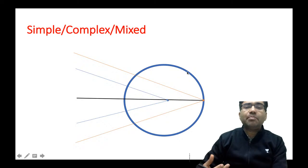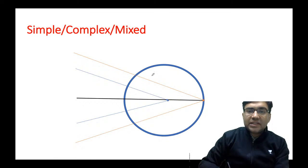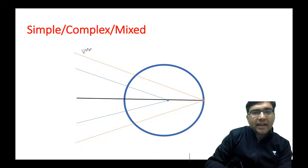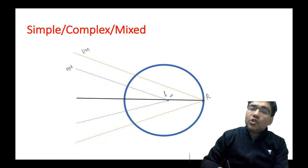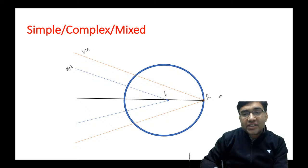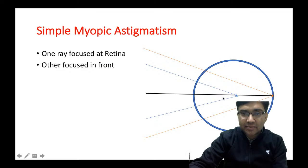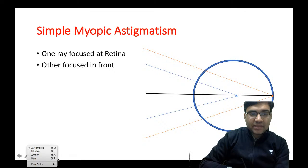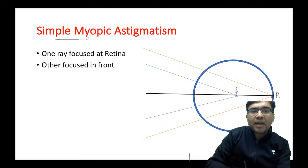Another classification is simple, compound, and mixed astigmatism. They can give you ray diagrams: a vertical meridian and a horizontal meridian. Whenever a ray focuses in front of the retina it is myopic, and whenever a ray focuses behind the retina it is hypermetropic. In simple myopic astigmatism, one ray focuses on the retina and the other focuses in front of the retina.